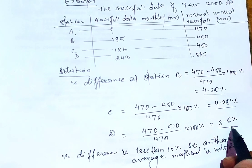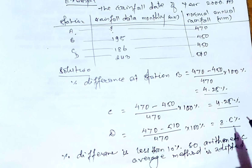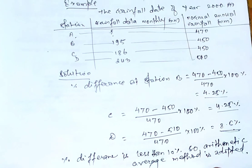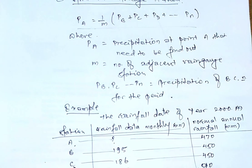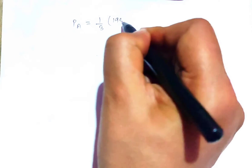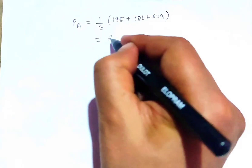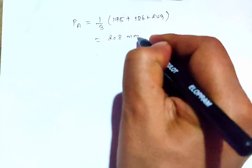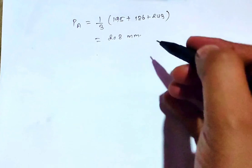If this value were above 10%, we would need to use another method. Since the condition is met, we apply the arithmetic average method formula. The missing rainfall at station A equals one-third times (195 plus 186 plus 243), which equals 208 mm. So the monthly rainfall at station A for the given data is approximately 208 mm.